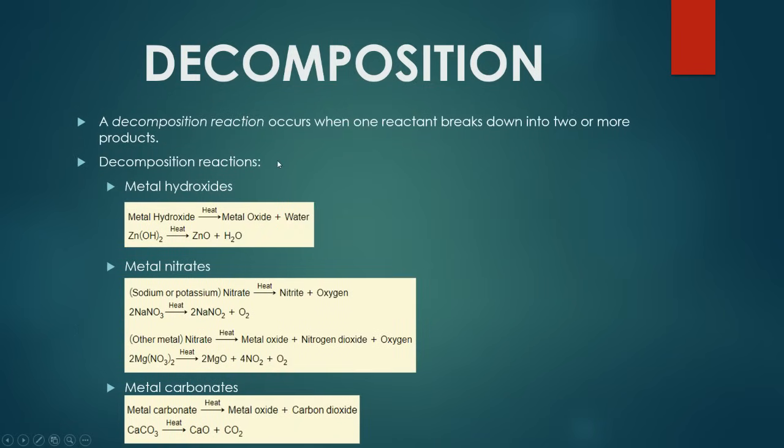Let's take a look at something called decomposition. This isn't exactly to do with the reactivity series, but one thing to note is that the higher up a metal is in the reactivity series, for example potassium, when they form a compound, the compound is a lot more stable than, say, a metal compound of a lower reactivity. A magnesium chloride molecule is more stable than, say, zinc chloride. Ultimately, decomposition reactions occur when one reactant breaks down into two or more products. There are three main compounds that you need to memorize in terms of decomposition. First of all is the metal hydroxide.